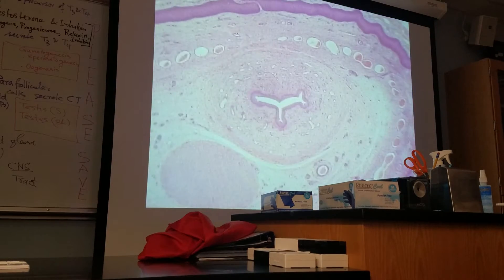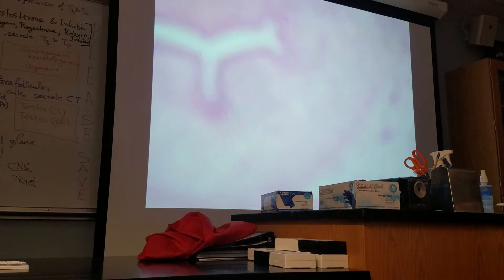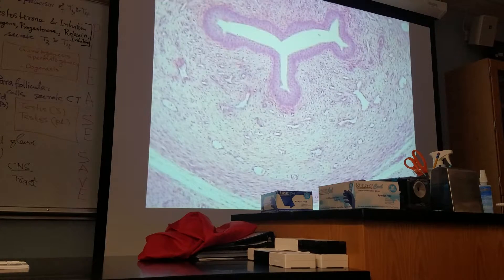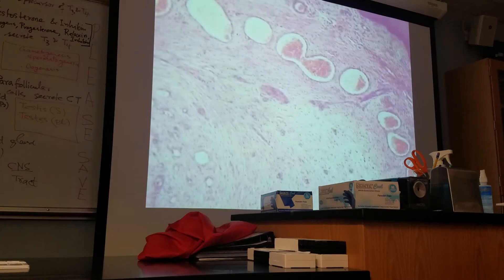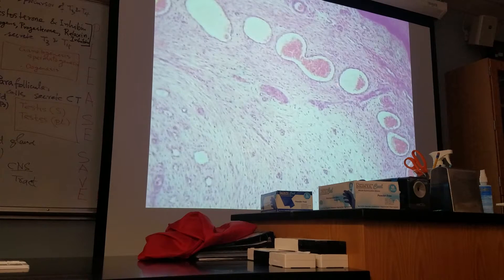If you look at the epithelium of the urethra, it is stratified columnar epithelium — this is the urethra. You can look at the blood vessels in the corpus spongiosum; this is erectile tissue, and you can still see some red blood cells.